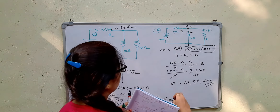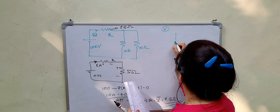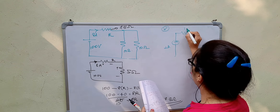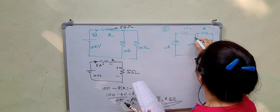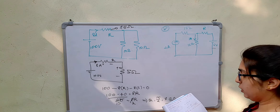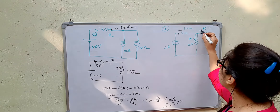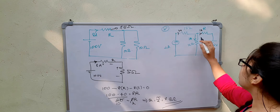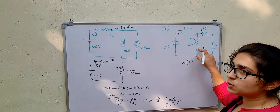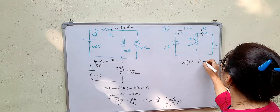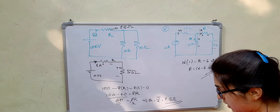Now let us consider another problem. We have a current source of 2 amperes, this is 1 ohm, this is 12 ohms, R, and a voltage source of 6 volts. The current flowing through that particular branch is 1 ampere. If 2 amperes flows in this direction and 1 ampere goes into one branch, obviously 1 ampere remains. Applying KVL: 12 into 1 gives a potential rise, plus 1 into R, minus 6 equals 0. So R equals 12 minus 6, which equals 6 ohms.